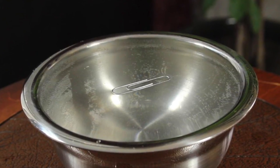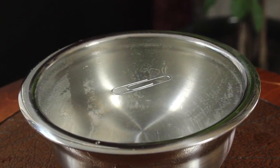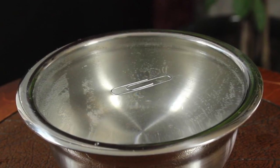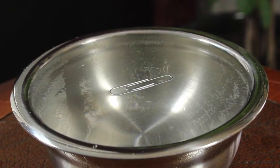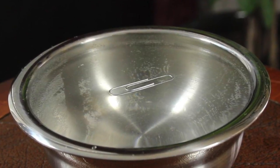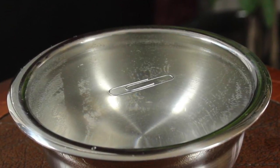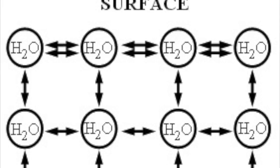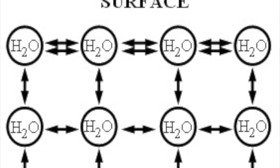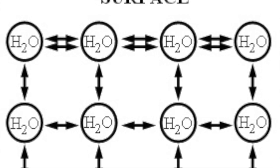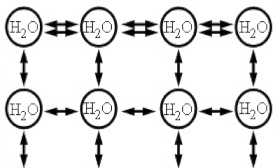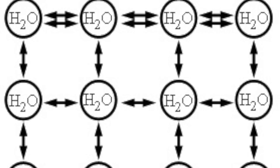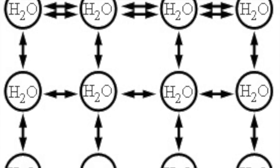Surface tension is created by the cohesive forces between the liquid molecules of water. The molecules on the edge of that cup of water are not touching other water molecules. They form a strong bond with the edge of the glass that is stronger than the bond between the molecules of water.